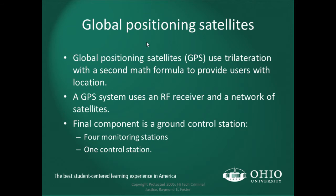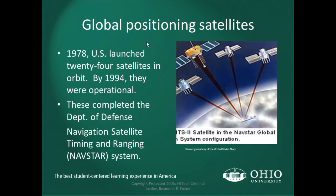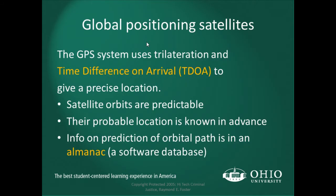GPS satellites — there are numerous ones in the sky. If you've had a GPS device you'll see it says 'searching for satellites.' The more satellites a device can pick up, the more accurate it can be in performing the arithmetic functions of trilateration to give a determination of where you are and provide a lat-long that can be plotted on a map. The GPS system uses trilateration and TDOA — time difference on arrival — to give a precise location.